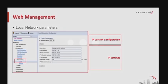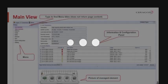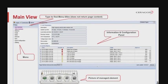The local network parameters can be set under Platform > Management > Networking > Local. You can configure both IPv4 and IPv6 versions on the IP20 platform. This is the main view of the element, comprised of three different sections.